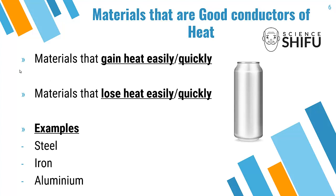It works both ways. Many students over the years only remember the first portion — that the material gains heat quickly — and forget that it also loses heat quickly. This is why when the exam presents a different application of this science knowledge, they fumble. You need to know both parts. Common examples of good conductors of heat include steel, iron, and aluminium — aluminium is commonly found in canned drinks like Coke, Pepsi, or green tea.